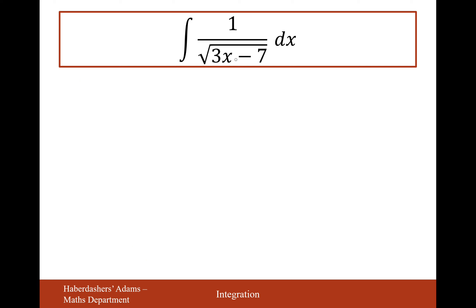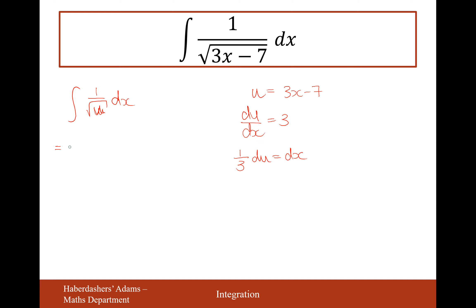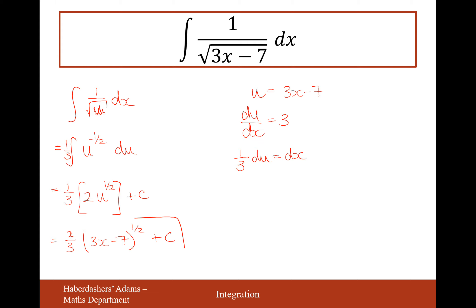Next, the integrand has 1/√(3x − 7) on the bottom of a fraction. The substitution is u = 3x − 7, so we integrate 1/√u dx, or u^(−1/2). Differentiating gives du/dx = 3, so dx = (1/3) du. The integral becomes (1/3) ∫u^(−1/2) du. Increasing the power by 1 to 1/2 and dividing by 1/2 gives 2, so the answer is (2/3)(3x − 7)^(1/2) + c, which could also be written as a square root.